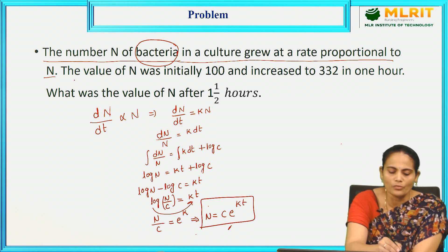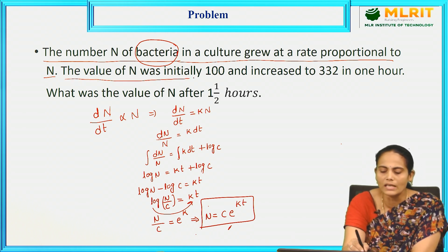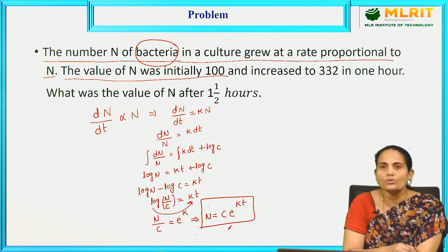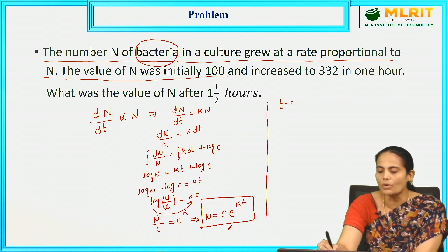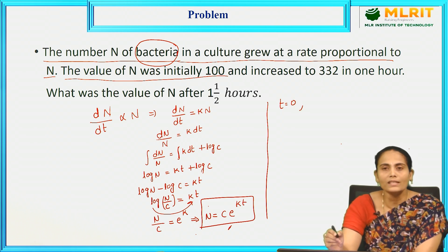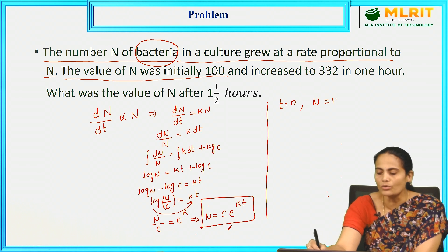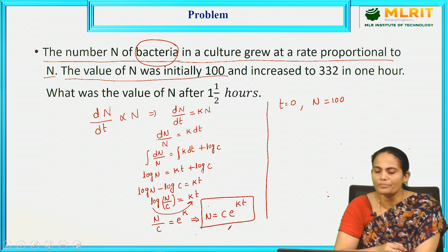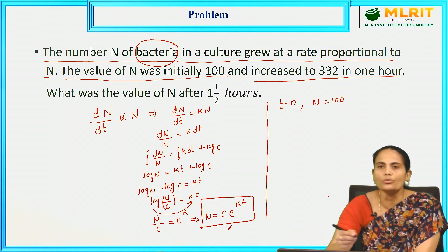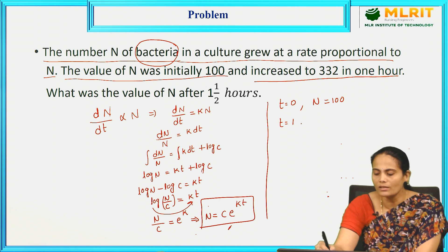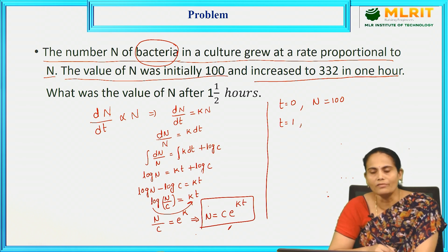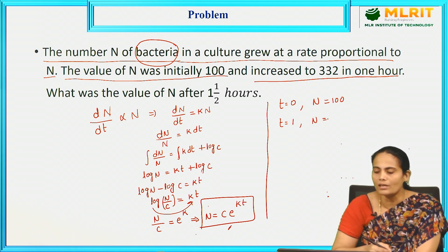From the problem: the value of N was initially 100. Initially means at time t = 0, the bacteria N = 100, and it increased to 332 in 1 hour. So at t = 1 hour, the bacteria is 332, and we need to find N at t = 1.5 hours.